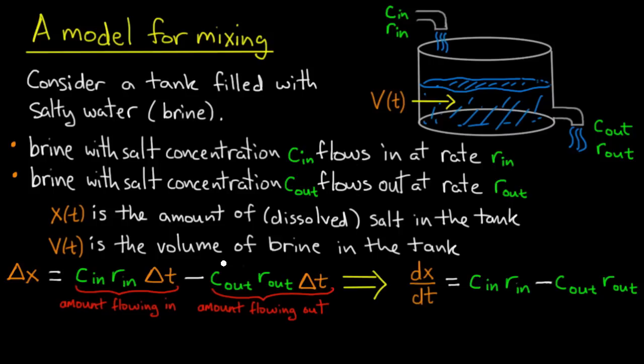This is not yet a differential equation, but we're considering a little tiny time interval Δt. We can turn it into a differential equation by dividing both sides by Δt, and letting Δt go to zero. So taking the limit as Δt goes to zero. That quantity Δx divided by Δt becomes dx/dt, and dx/dt is equal to C_in times r_in minus C_out times r_out.